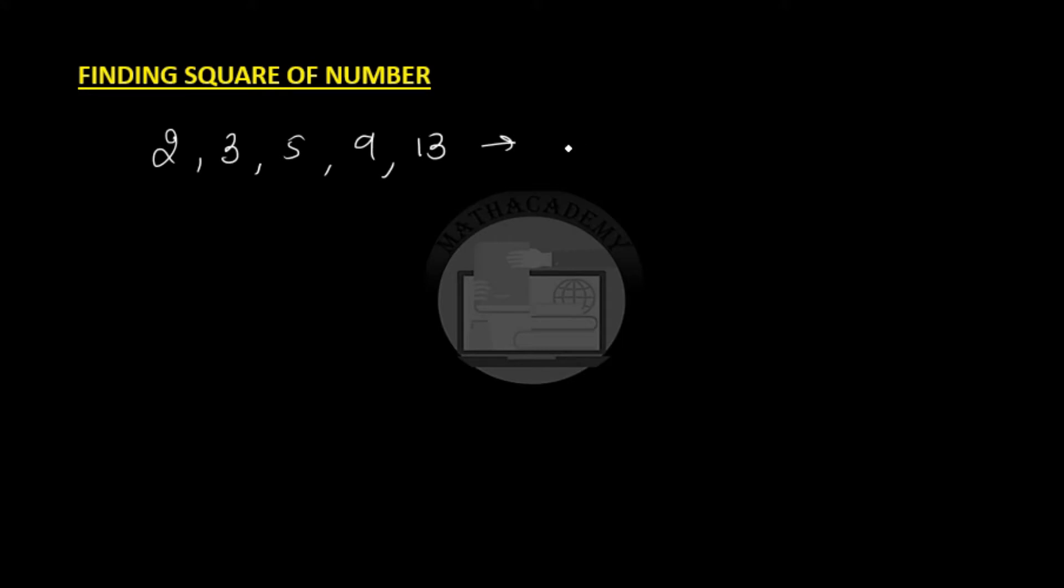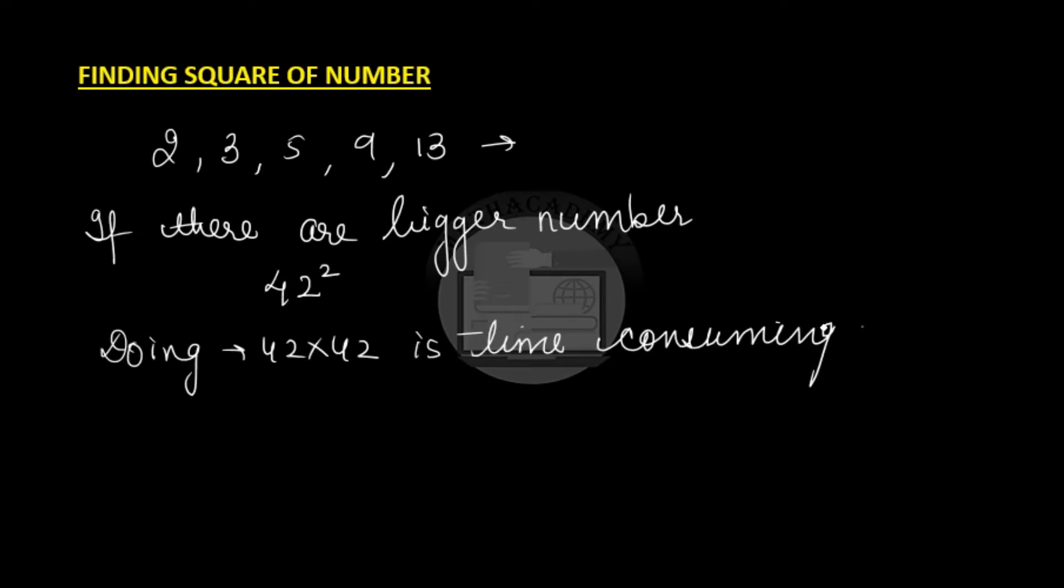We can do 2 times 2, 3 times 3, 5 times 5, but if the numbers are big, if there are bigger numbers. For example, 42 square, how do we find the square of 42 without actual multiplication?